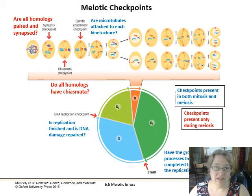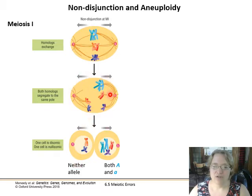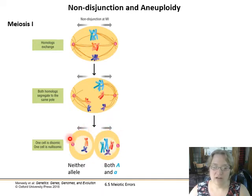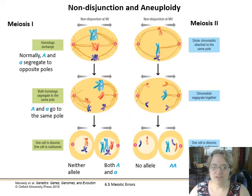If all these checkpoints are complete, the process proceeds. What can occur is called non-disjunction. In meiosis I, the homologous chromosomes are being exchanged and pulled apart, but they can fail to disjoin. A non-disjunction can occur, and then you can have one cell that is disomic (n+1) and one cell that is nullosomic (n-1) — less than it's supposed to have. Normally the two chromosomes would segregate to opposite poles, but if they go to the same pole, that's a problem.